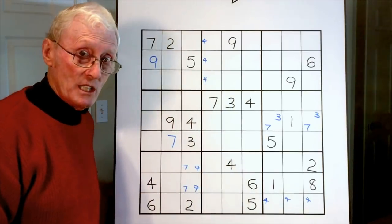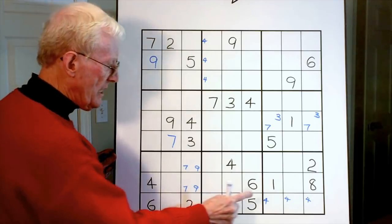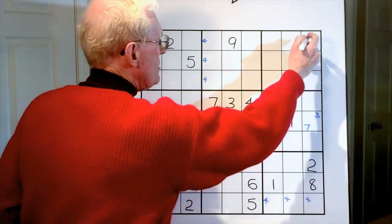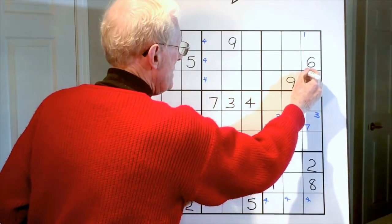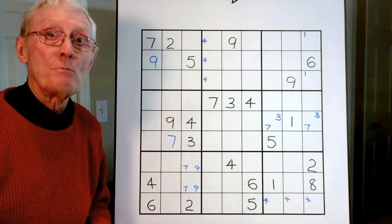In the early stages I also put single numbers in at the early stages. For example, I noticed here we have a one here, we have a one, we have a left, a center. A one could go either here or here. Those are the sorts of little numbers I put in at the beginning of working on a difficult puzzle.